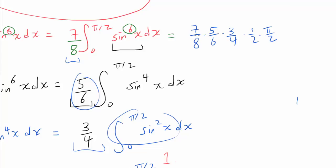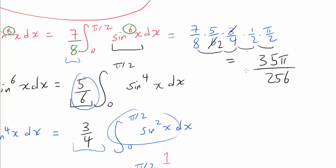Multiplying this out: 3 and 6 cancel, leaving 2 in the denominator. We get 7×5 = 35 in the numerator, and the denominators give 2·4·8·2 = 128, times 2 = 256. So it looks like our answer is 35π/256.